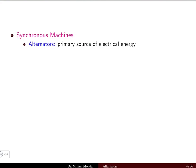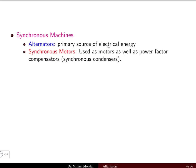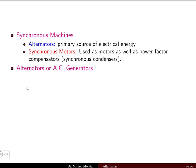A synchronous machine can be an alternator, which is the primary source of electrical energy. Any generating plant produces electrical energy with the help of an alternator, which is a three-phase synchronous generator. The synchronous motor can be used as a motor as well as a power factor compensator, also known as a synchronous condenser.